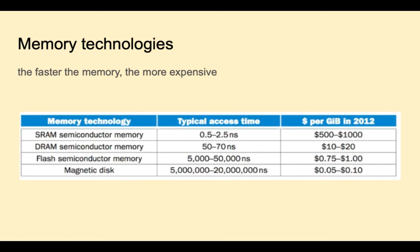Then DRAM, down to 50 to 70 nanoseconds, 10 to 20 dollars per gigabit. The fastest and most expensive memory is SRAM, as low as 0.5 nanosecond access time, but 5 to a thousand dollars per gigabit. The good news about all memory technologies is that over the years, they are getting faster and less expensive.